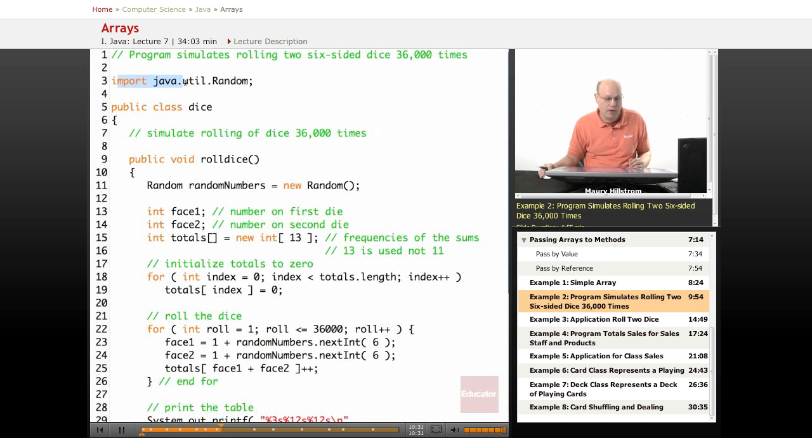So for this, we need to import our randomizer, our java.utility.random package, because we're going to use a random number generator for the randomness of rolling these dice. We're going to call this main class dice, and then we set up our method roll dice, that's going to get called in our application later.